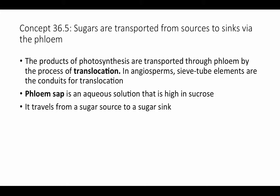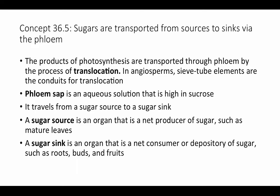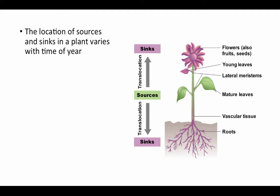Sugar travels from a sugar source — a place where sugar is generated — to a sugar sink, the place where sugar is used. A sugar source is an organ that's a net producer of sugar, such as mature actively photosynthesizing leaves. A sugar sink is an organ that's a net consumer or depository of sugar — either using up sugar because it's highly metabolically active, such as a growing region undergoing active cell division, or storing carbohydrates to be used later by the plant.